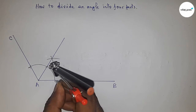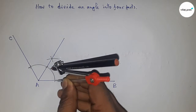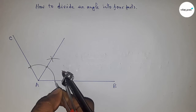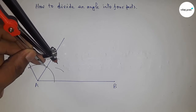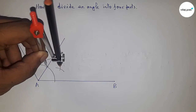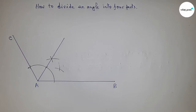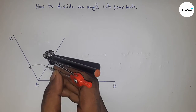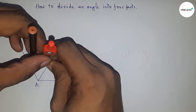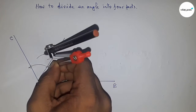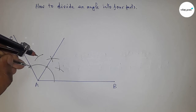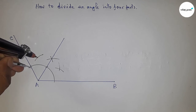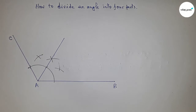Again, we bisect this angle. Taking greater than half of this and drawing an arc here, then putting the compass here with the same length and cutting the arc. By this way we are bisecting this angle — taking greater than half and drawing the arc.